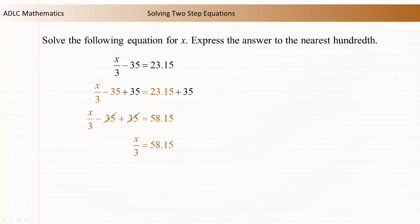Undo the division operation by multiplying both sides of the equation by 3. On the left, (x/3) × 3 = x. On the right, 58.15 × 3 = 174.45.